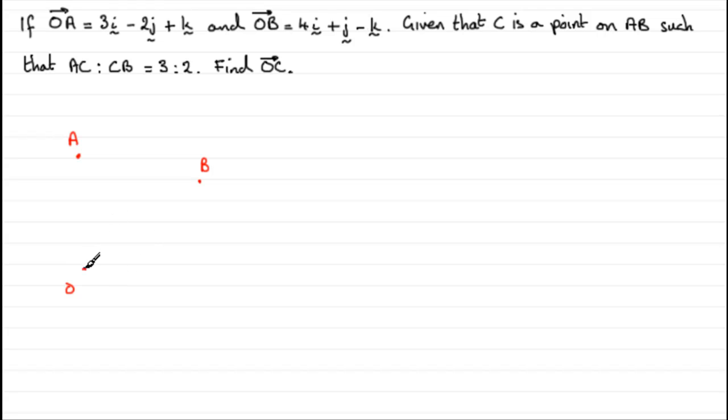So we've got the vector OA and we've got the vector OB. Let's write the vector OA as a column vector. We've got it as 3, minus 2, 1. And we've got the vector OB as 4, 1, minus 1.